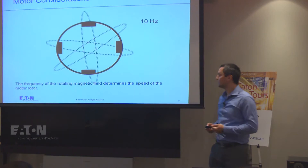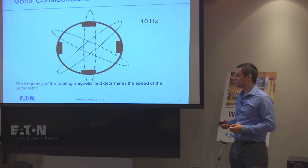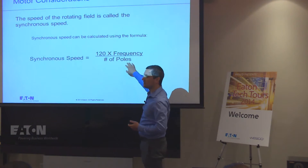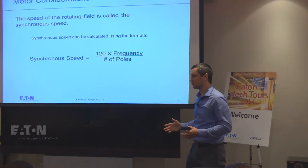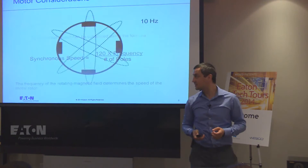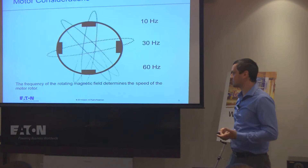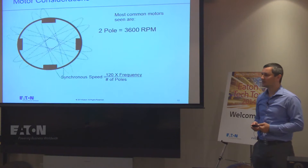If we're changing the frequency, we can also change the speed, because in the formula it's 120 multiplied by frequency divided by poles. The motor is already built — we have two, four, or six poles, so we can't change that anymore. What we can play with is the frequency: 10 Hz is going to be slow, 30 Hz faster, and 60 Hz is going to be the synchronous speed.